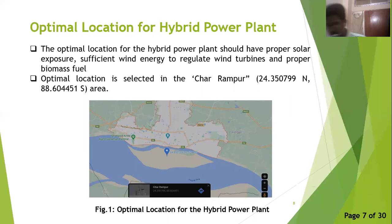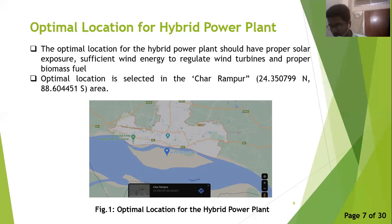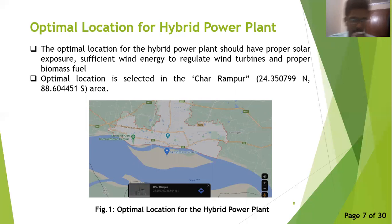The first step is to select the optimal location for the construction of the PV-wind biomass hybrid power plant. Based on the criteria of the PV-wind biomass hybrid power plant, the optimal location is selected in the Chaur Rampur area, which is situated near the bank of the Padma river.